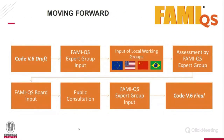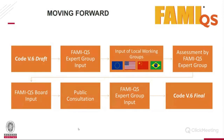This process took around three years. We started moving forward with a draft of the code version 6, which was sent to the FAMI-QS expert group for their inputs. After their comments, it was sent to different regional working groups, including one in the United States. After receiving comments from these regions, it was sent back to the expert group for further review. According to the international protocol, it was submitted to public consultation. After incorporating those comments, the final version 6 was published around September 2017.